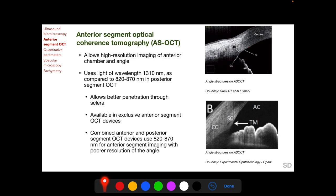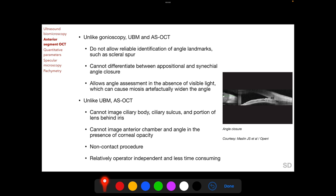On AS-OCT, Schwalbe's line is labeled where the cornea meets the sclera, representing the posterior extent of Descemet's membrane. The scleral spur lies adjacent to the anteriormost extent of the ciliary body. The trabecular meshwork lies between Schwalbe's line and the scleral spur. In this photograph, Schlemm's canal and the collector channels have also been imaged.